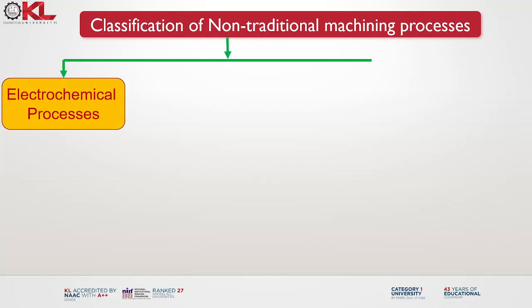Electrochemical processes involve the conversion of chemical energy into electrical energy or vice versa through redox reactions. These processes rely on the movement of ions in an electrolyte and the transfer of electrons at an electrode. Electrochemical processes play a crucial role in various fields including energy conversion, material science, environmental remediation and chemical synthesis.